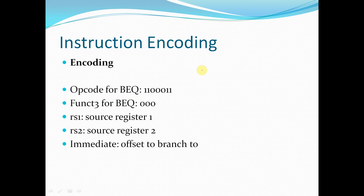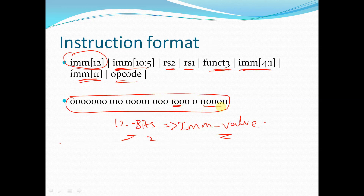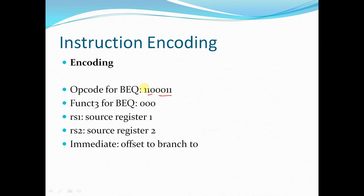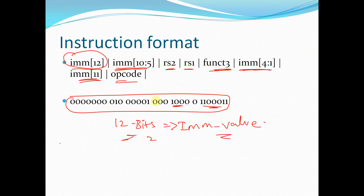In this particular example, the opcode is 1100011. Funct3 here is 000. For BEQ instructions, funct3 is 000. RS1 is the source register 1 address, RS2 is the source register 2 address, and the immediate value — that is, the offset for the branch — is also provided in this instruction.